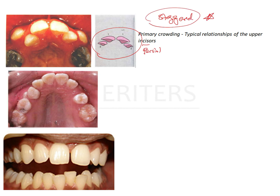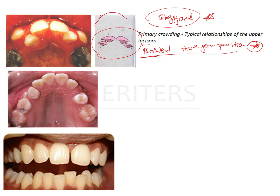Another characteristic feature is persistent tooth germ position, which itself is a separate question that can be asked in examinations. What this means is that when the incisors are developing, in the tooth germ position they are much more lingually placed than their final position in the arch. During eruption the incisors move forward and downward into the arch, but here the lateral incisors are still lingually blocked out, present in their original tooth germ position — that's why it's called persistent tooth germ position.